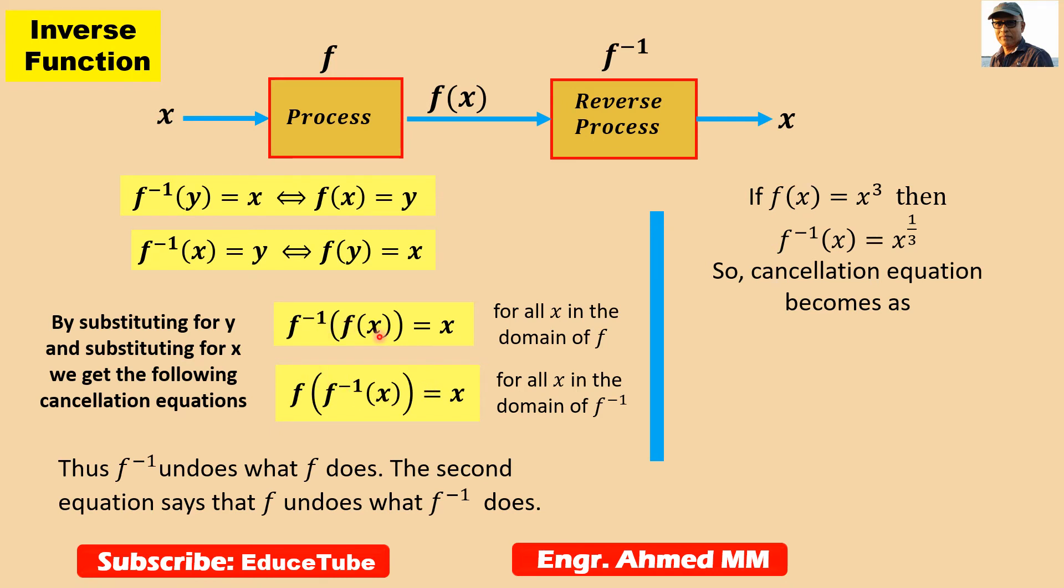The first cancellation equation says if we start with x, apply f, then f inverse, I mean inverse of f, we arrive back at x. Very clear. Another important thing: inverse f undoes what f does. The second equation says f undoes what inverse f does.